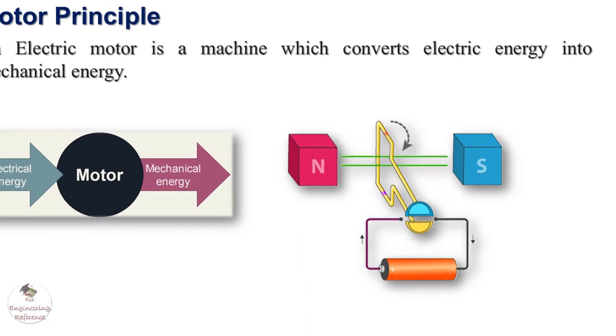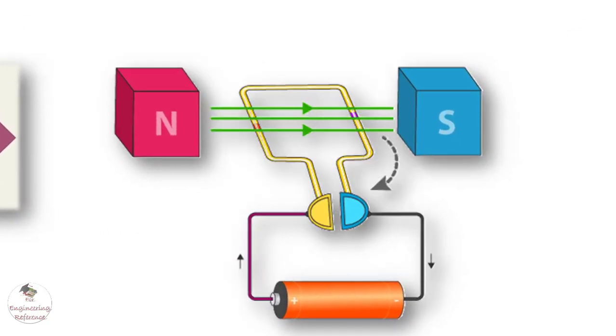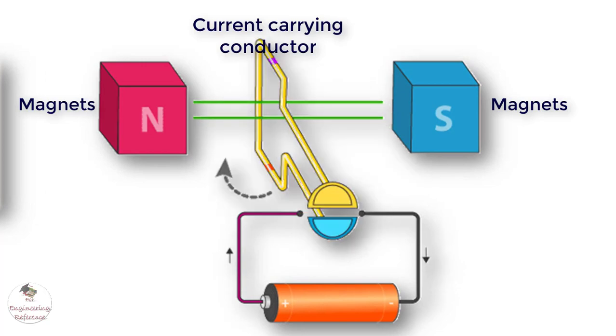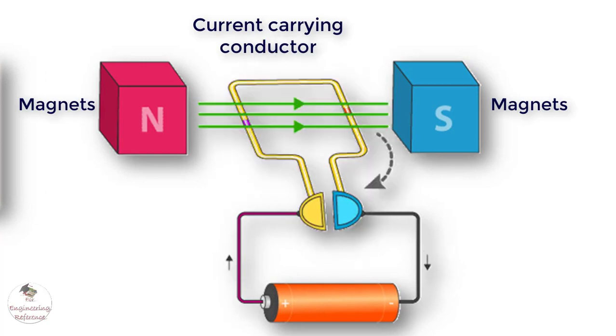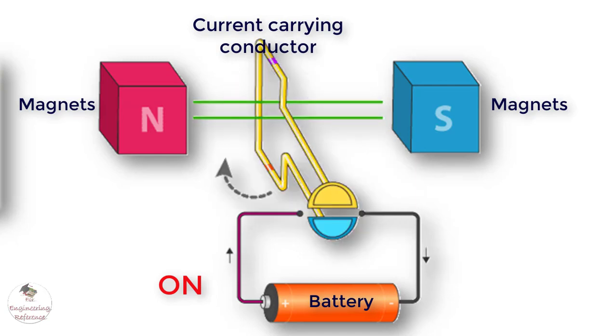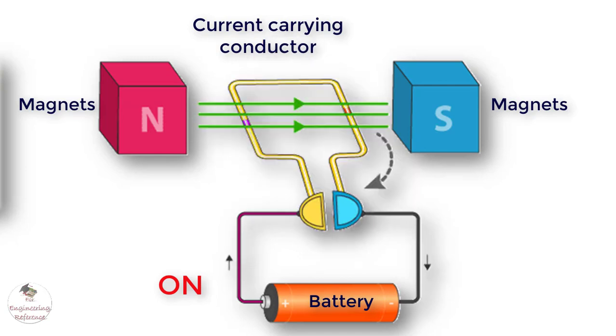This animation shows that the current carrying conductor is placed between the two magnets and is connected to the battery. When the battery is turned on, there is a current flow in the conductor and magnetic field from the north to the south.